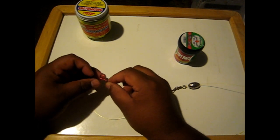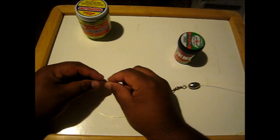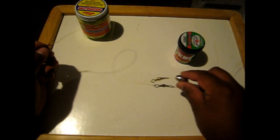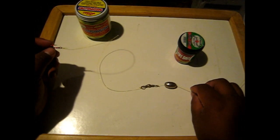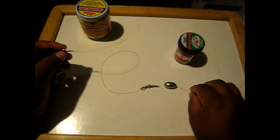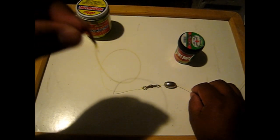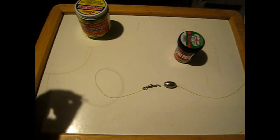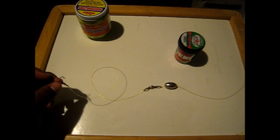So that way when you cast it out, the line's going to hit the floor or the bottom of the water and your bait is going to float up. When it's floating up, the fish are going to be able to see it, especially if there's low-lying grass. It'll float above the grass and it'll be more visible to the fish.